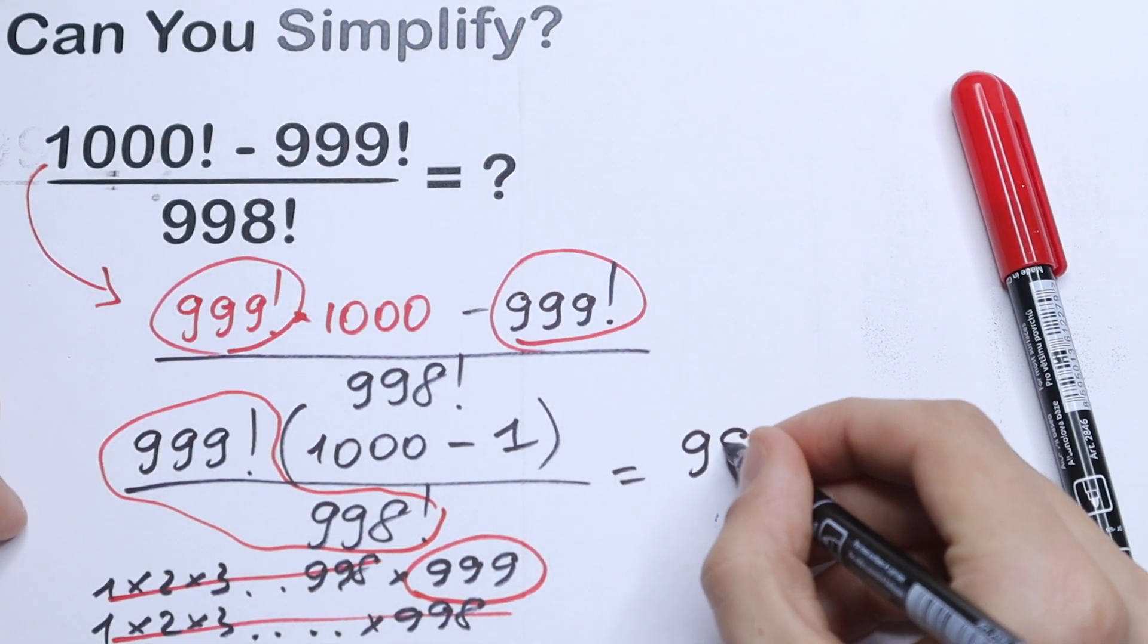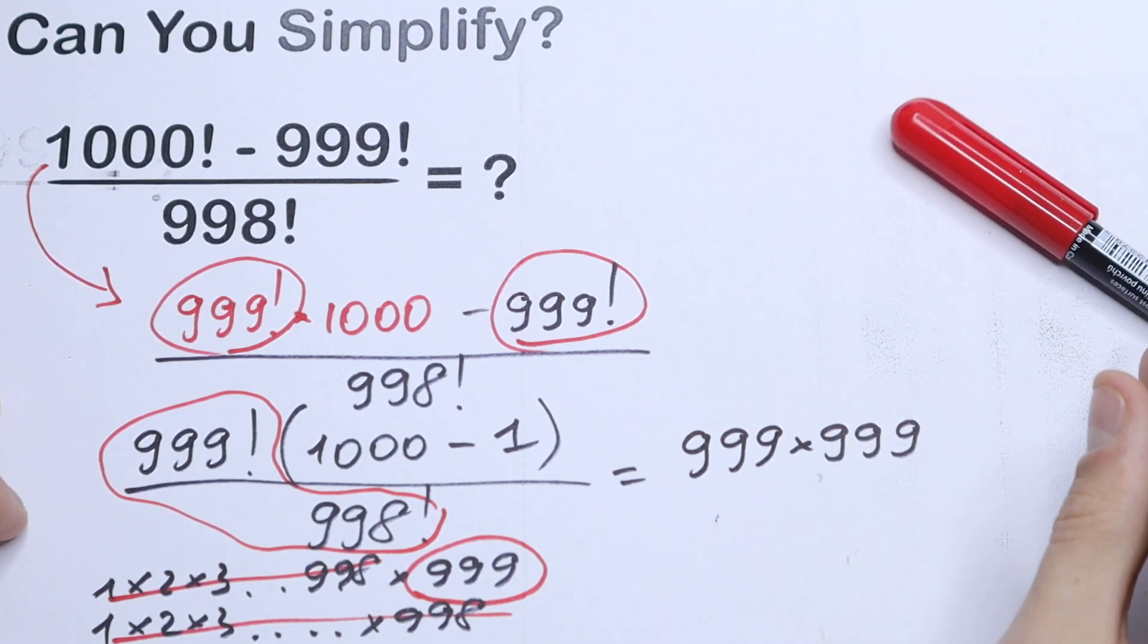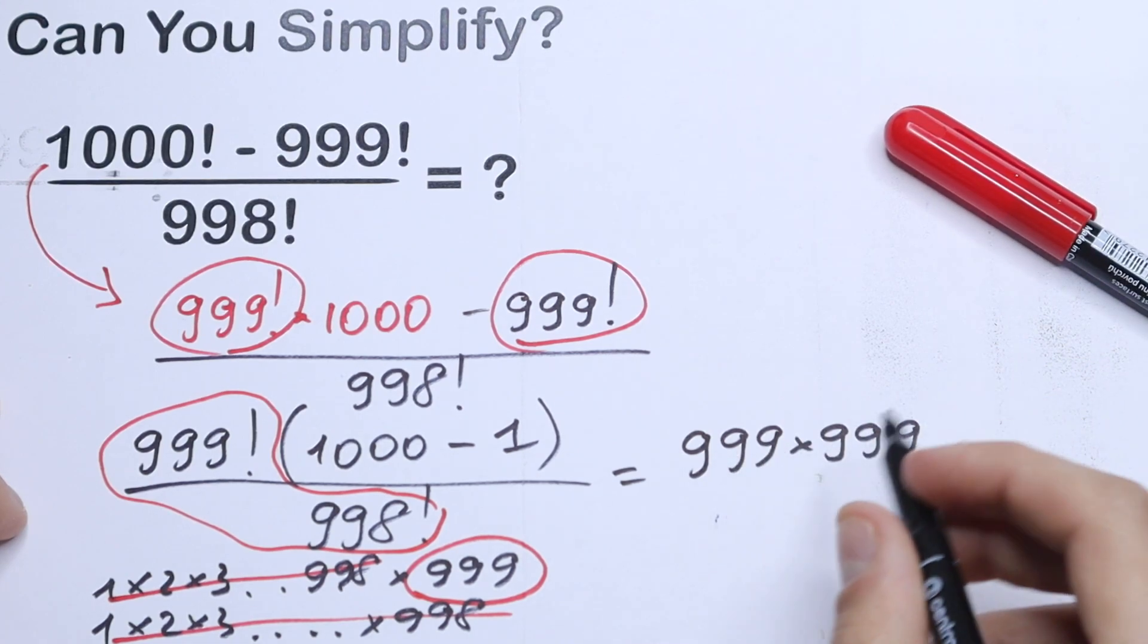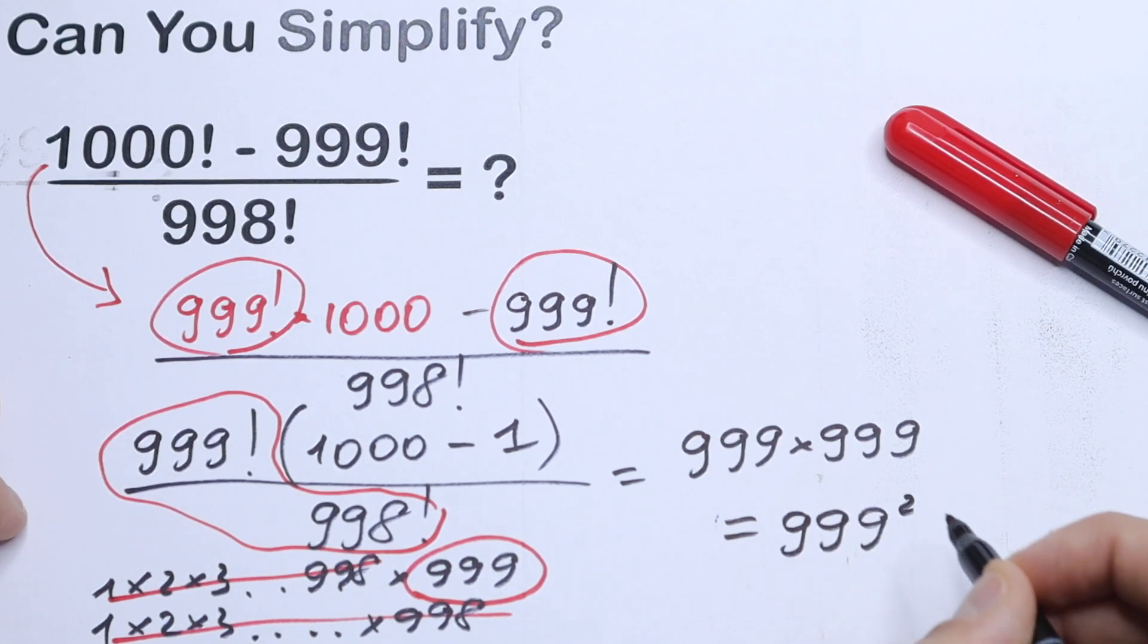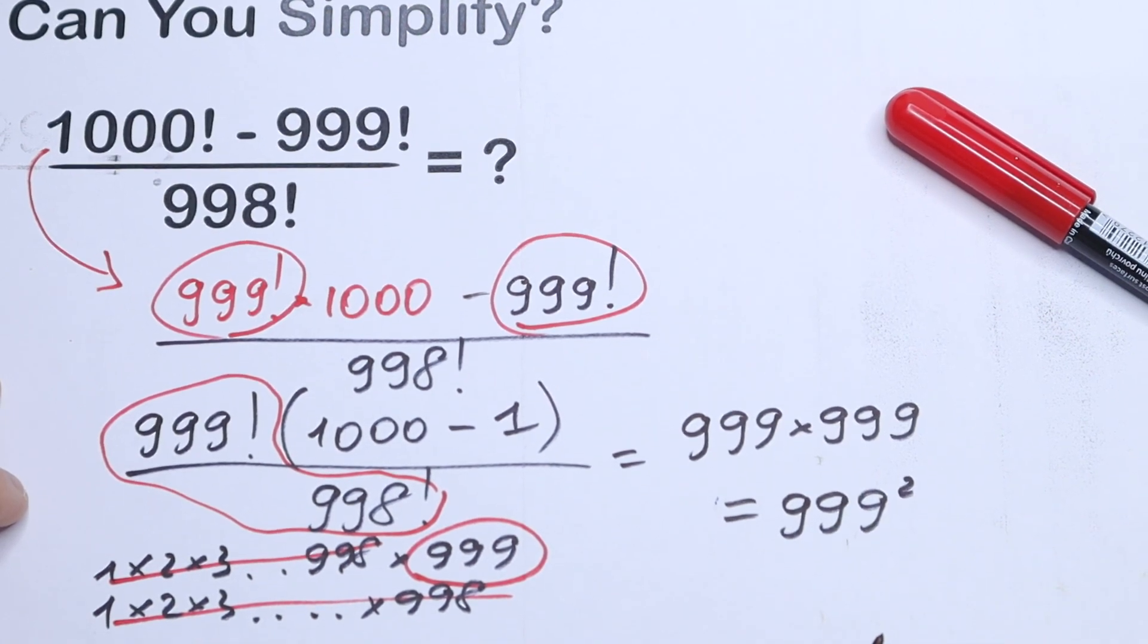And as a result we will have the final case: 999 times 999. We can write it as 999 squared. And this will be our answer.